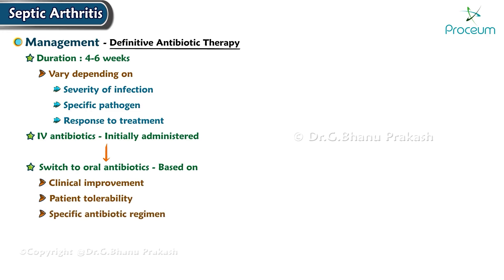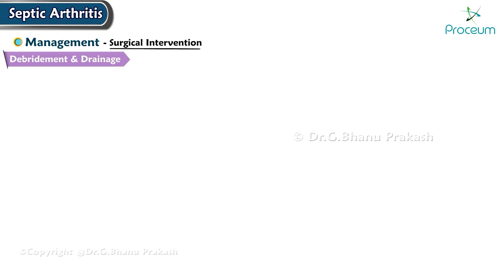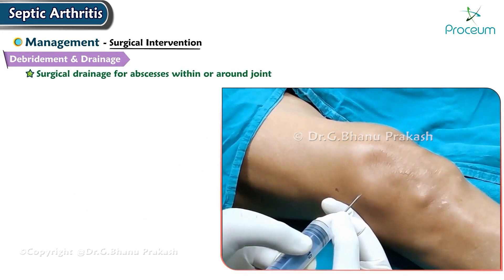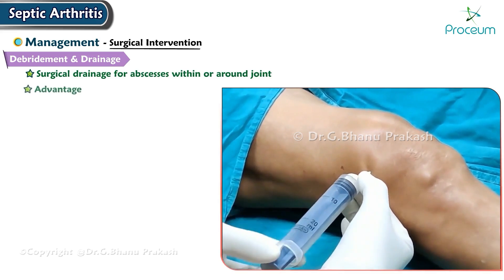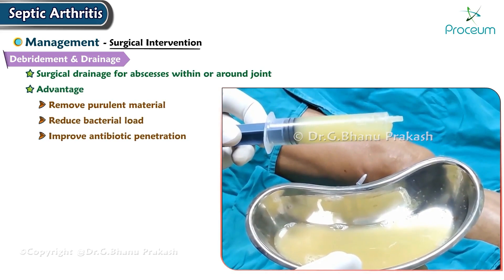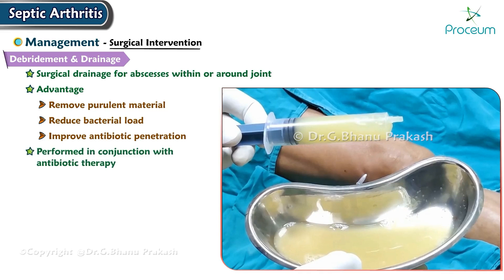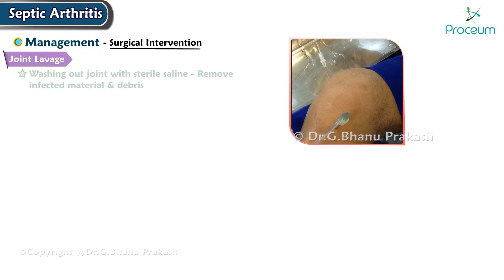Surgical intervention includes debridement and drainage: surgical drainage is performed for abscesses within or around the joint to remove purulent material, reduce bacterial load, and improve antibiotic penetration. This procedure is performed in conjunction with antibiotic therapy. Joint lavage, washing out the joint with sterile saline, is done to remove infected material, debris, and bacterial toxins.